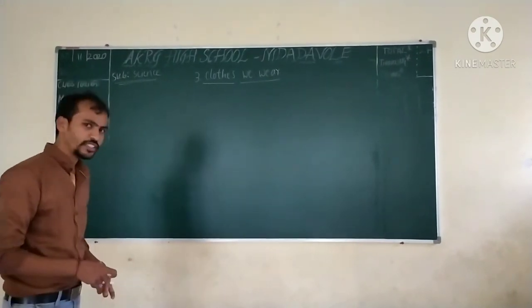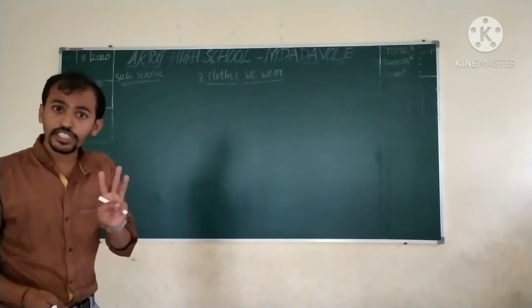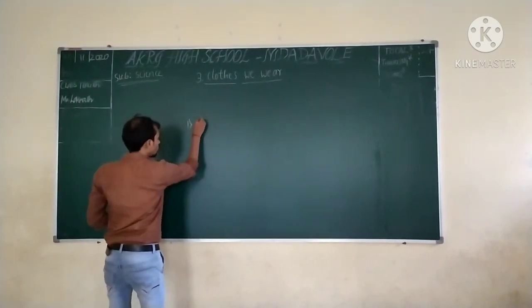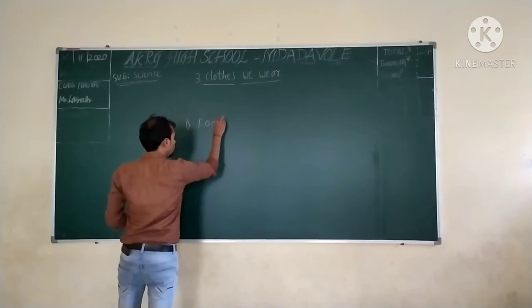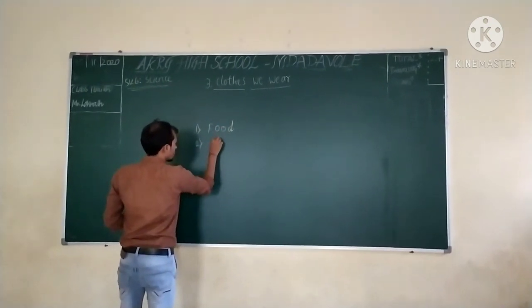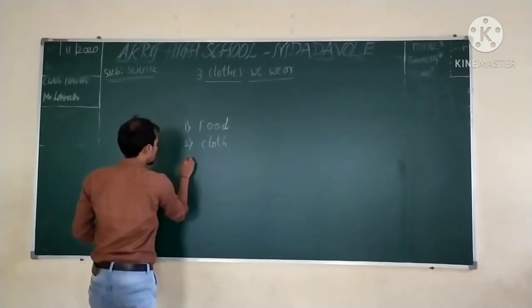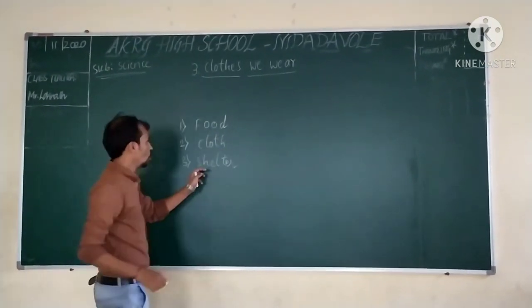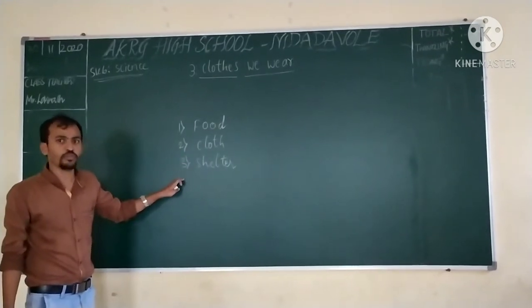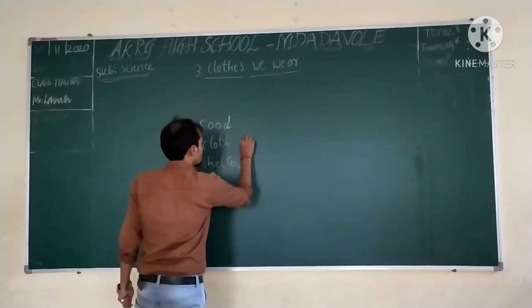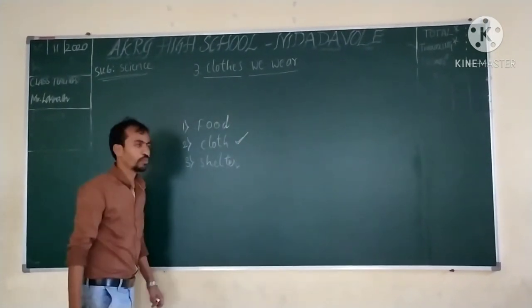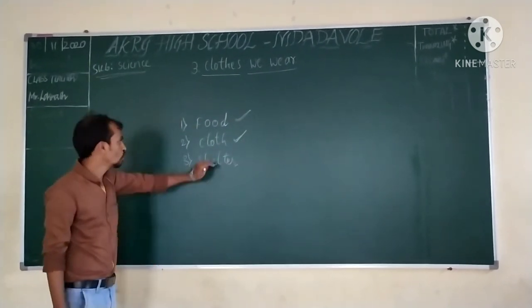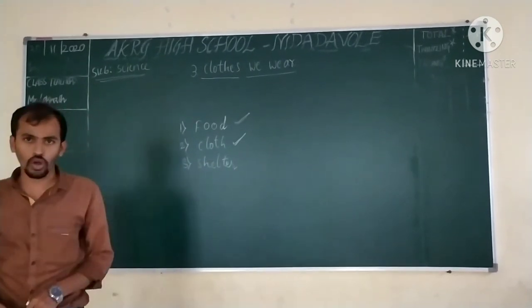What are these basic needs? I think we have already discussed that there are three main basic needs. The first one is food, the second one is cloth, and the third one is shelter. Out of all these three basic needs, we are going to discuss about cloth, because we discussed food in the previous session. So in today's class we are going to discuss about cloth.